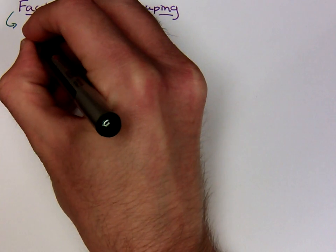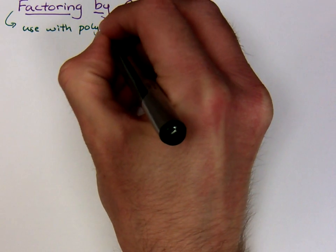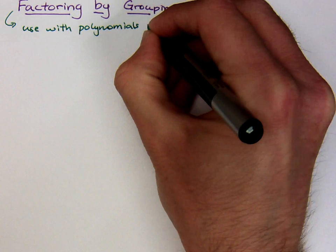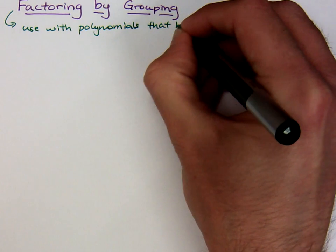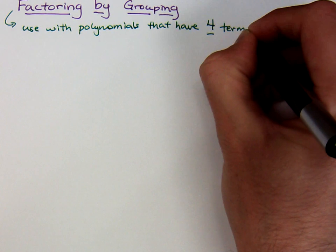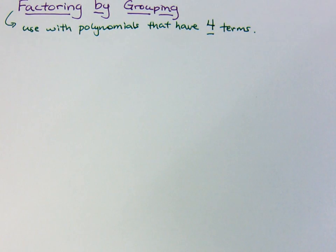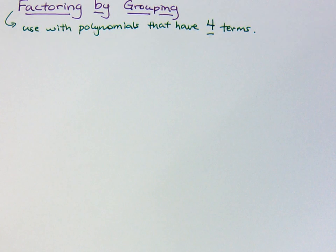Not always, but typically, with polynomials, we use this technique with polynomials that have four terms. Now that is not to say that you can only do this with four terms, because there are some examples where you can do some interesting factoring by grouping with more than four terms. But just typically, the way we see this, you have just four terms when you're trying to factor.